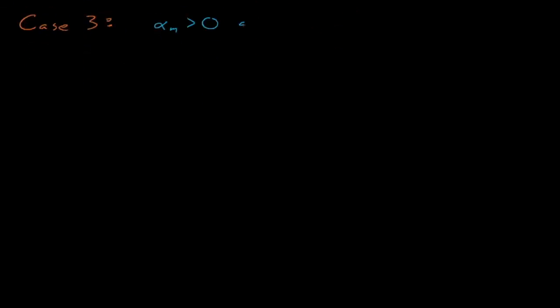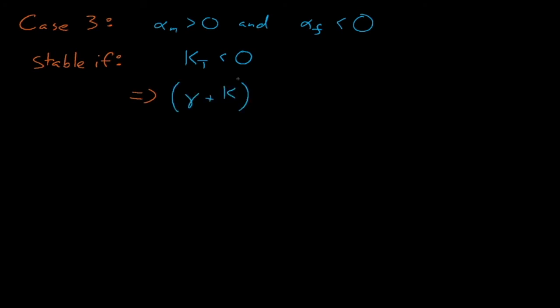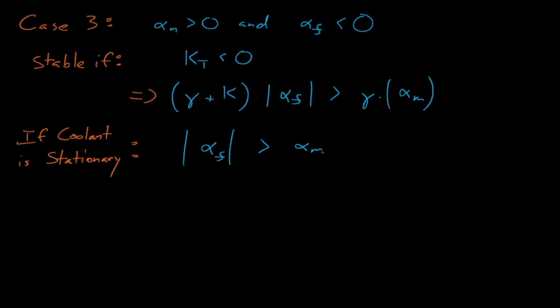In case three, we have positive moderator feedback but negative fuel feedback. Just as with case two, our system will be unstable if k_t becomes positive, which may happen depending on the magnitude of alpha_f and alpha_m. If gamma plus kappa times the absolute value of alpha_f is greater than gamma times alpha_m, then k_t will become negative and our system will become unstable. If we happen to have stationary coolant, kappa equals zero, and our system will become unstable if the magnitude of the fuel reactivity coefficient is greater than the magnitude of the moderator reactivity coefficient. This interpretation comes with the caveat that our two complicated B and C terms must also be positive.